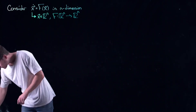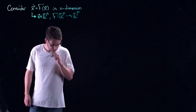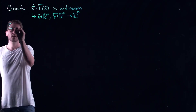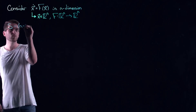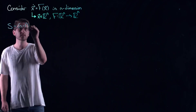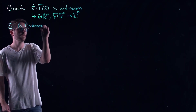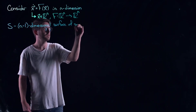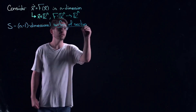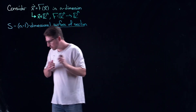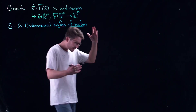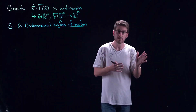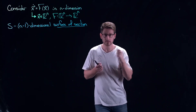The way that Poincaré came up with to analyze these systems is he introduced what's called a surface of section. S, for section, is going to be an n−1 dimensional — one less dimension than the phase space — surface of section. This means it's essentially a hyperplane that I put into the phase space that trajectories pierce, that they go through.